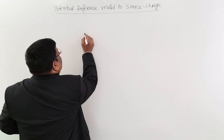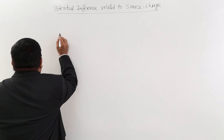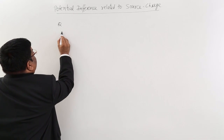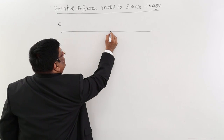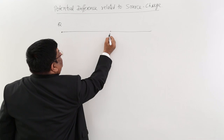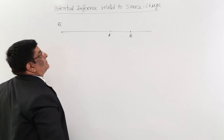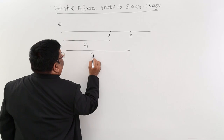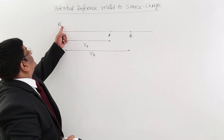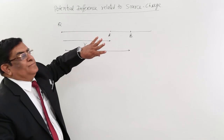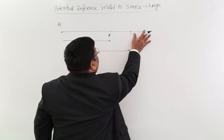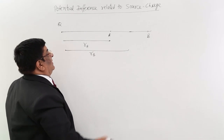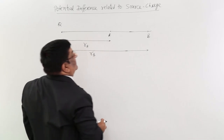Here is an electric charge which has size Q. From here, this is point A and this is point B. This distance is Ra and this distance is Rb. Because of this charge Q, there is an electric field all around — everywhere its electric field can be experienced. I want to find the potential difference between point A and point B, where A is at Ra and B is at distance Rb.